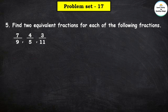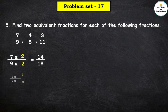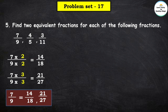Now question number 5: Find 2 equivalent fractions for each of the following fractions: 7 upon 9, 4 upon 5, and 3 upon 11. First fraction is 7 upon 9. Multiply by 2: 7 × 2 = 14 and 9 × 2 = 18, giving 14 upon 18. Then multiply by 3: 7 × 3 = 21 and 9 × 3 = 27, giving 21 upon 27. So the two equivalent fractions of 7 upon 9 are 14 upon 18 and 21 upon 27.